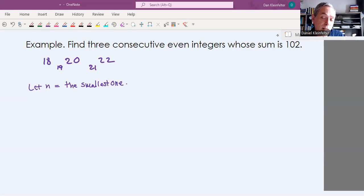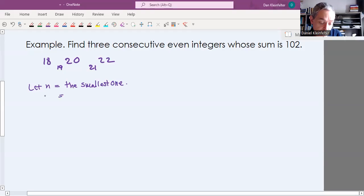All right. So the difference here is that on even numbers, they're not right next to each other. There's an odd number in between. So if you add 18, 20, and 22, 18 and 20 are separated by 19, 20 and 22 are separated by 21. So it isn't going to be n, n plus 1, n plus 2 for these. If we let n be the smallest one, the next even number is going to be n plus 2. And then the one after that is going to be n plus 4. Because they are two numbers apart.